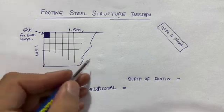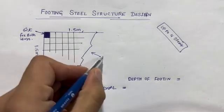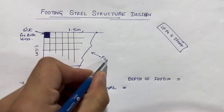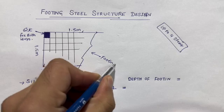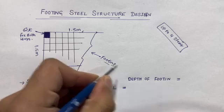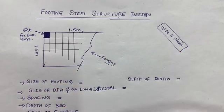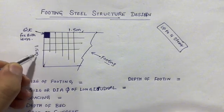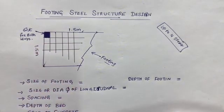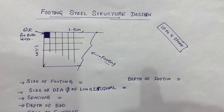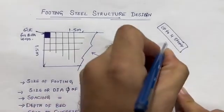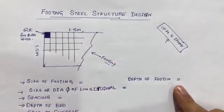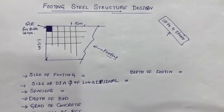This is footing. The size of footing for up to 4 storey residential building — not for commercial building — should not be less than 1.5 meter by 1.5 meter, which is about 5 feet by 5 feet. This is a very important point to know.